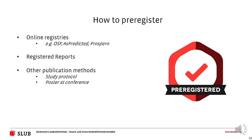As long as you follow the basic principles, you can actually be creative about how to pre-register a study. There are three different categories. First, online registries, which tend to be the most common — you receive a permanent identifier and timestamp with your document. Then there are registered reports, which might rely on online registries but have special features I'll explain in detail shortly. And finally, you can use any other type of publication as a pre-registration, such as publishing your study protocol in advance or using a conference poster to pre-register your study.